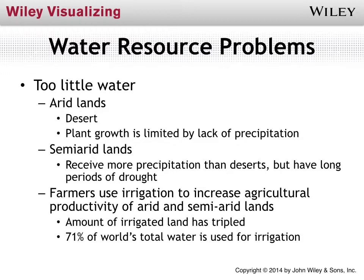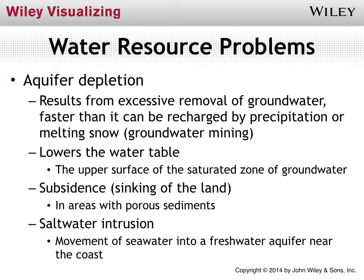Farmers in many areas use irrigation to increase the productivity of their arid and semi-arid lands. Without irrigation in California's valleys, we could not grow food. Seventy-one percent of the water used in the world goes to irrigation — on average, 71% of our water supply is used to grow food. Depending on the type of irrigation, it can be efficient like drip irrigation, or wasteful like flooding or overhead sprinklers where a lot of water is lost back to the atmosphere before it even touches the ground.